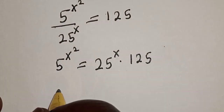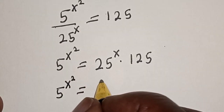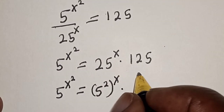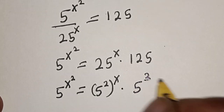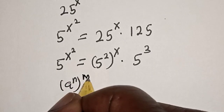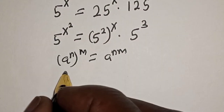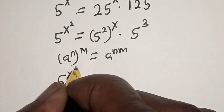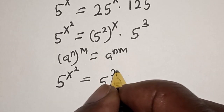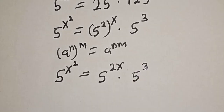Now, this is 5 raised to power s squared is equal to — 25 is 5 squared, raised to power s, multiplied by 125 which is 5 raised to power 3. Remember this rule: if you have a raised to power n, raised to power m, it equals a raised to power n times m. Then this equation becomes 5 raised to power s squared is equal to 5 raised to power 2s multiplied by 5 raised to power 3.